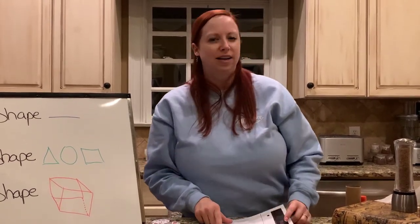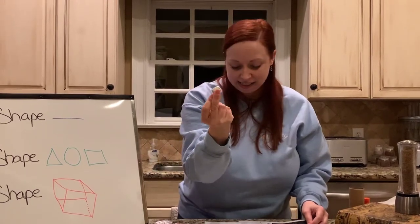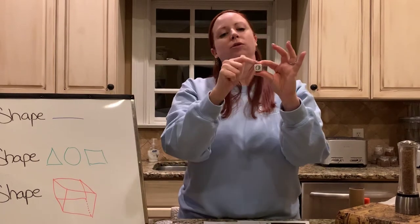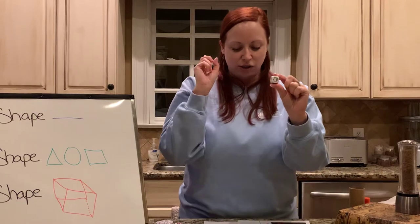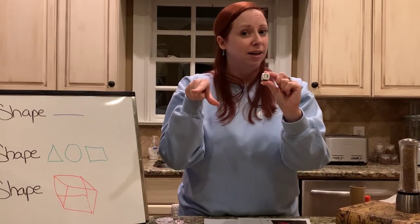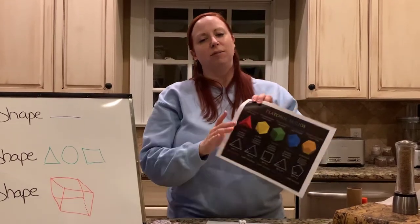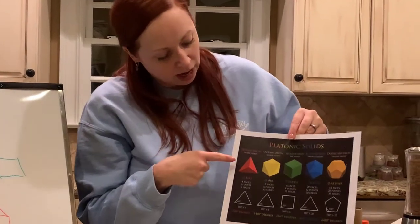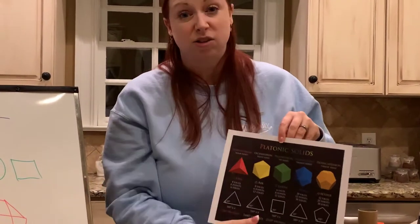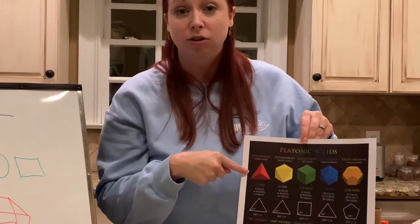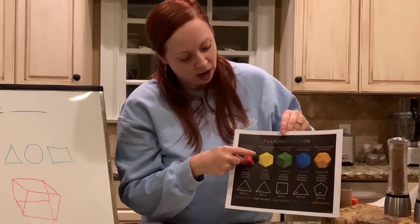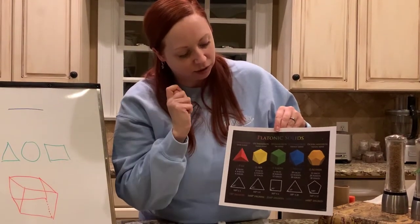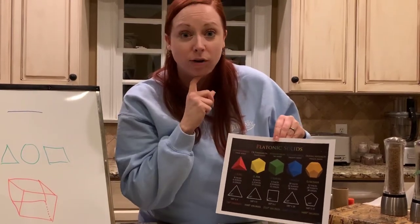Now there's something called a platonic solid. That's a 3D shape where each face is the same shape. Dice — every side is a square, square, square, square, square, square. All six sides are squares, so it's a hexahedron, but it's also a platonic solid. There are only five platonic solids. The tetrahedron has all triangular sides, and the octahedron — octo meaning 8, like an octopus — has 8 sides, all triangles, which makes it a platonic solid too.